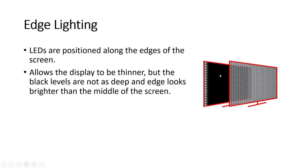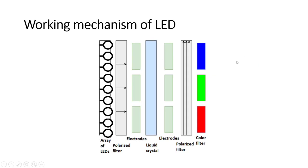The working mechanism of LED displays can be seen from this figure. It is basically the same as LCD, except the backlight is not a single CCFL lamp but an array of LEDs. The electrodes control the polarizer, which determines how much light from the LEDs will be allowed to pass, and depending on this control it determines where on the screen there will be more light and where there will be less.